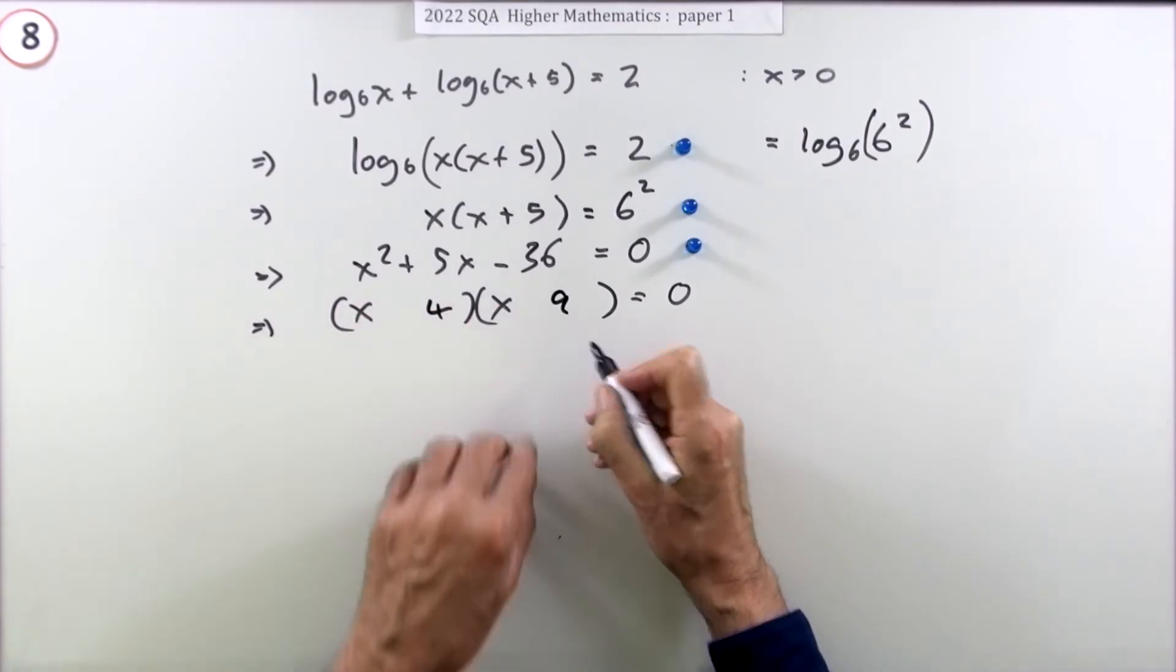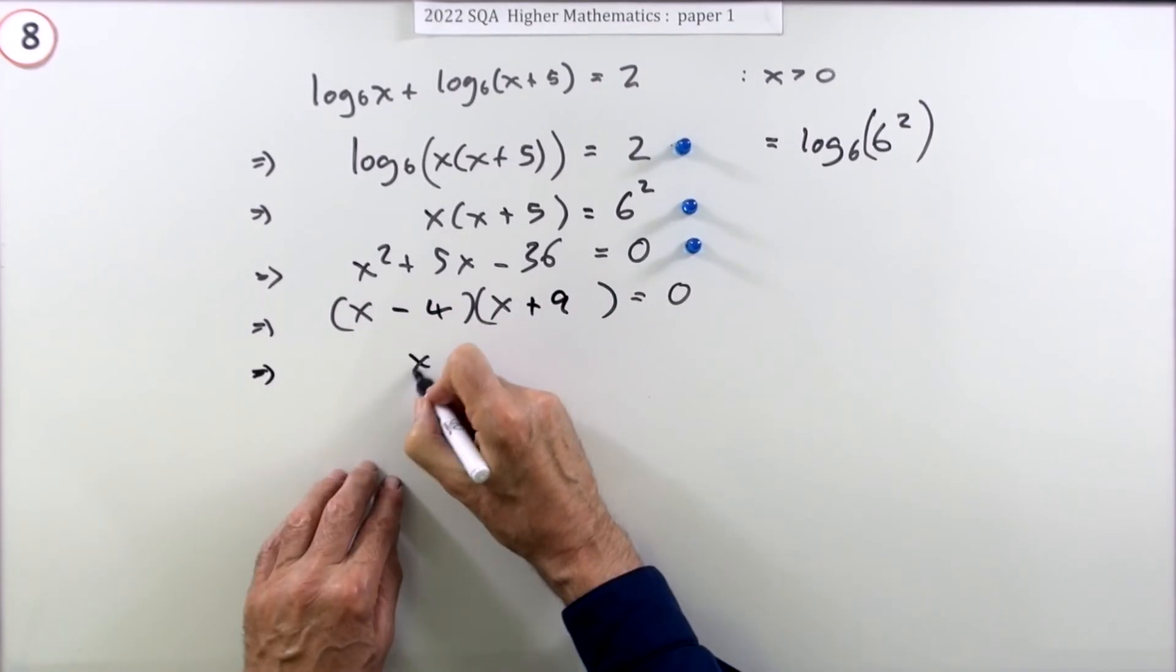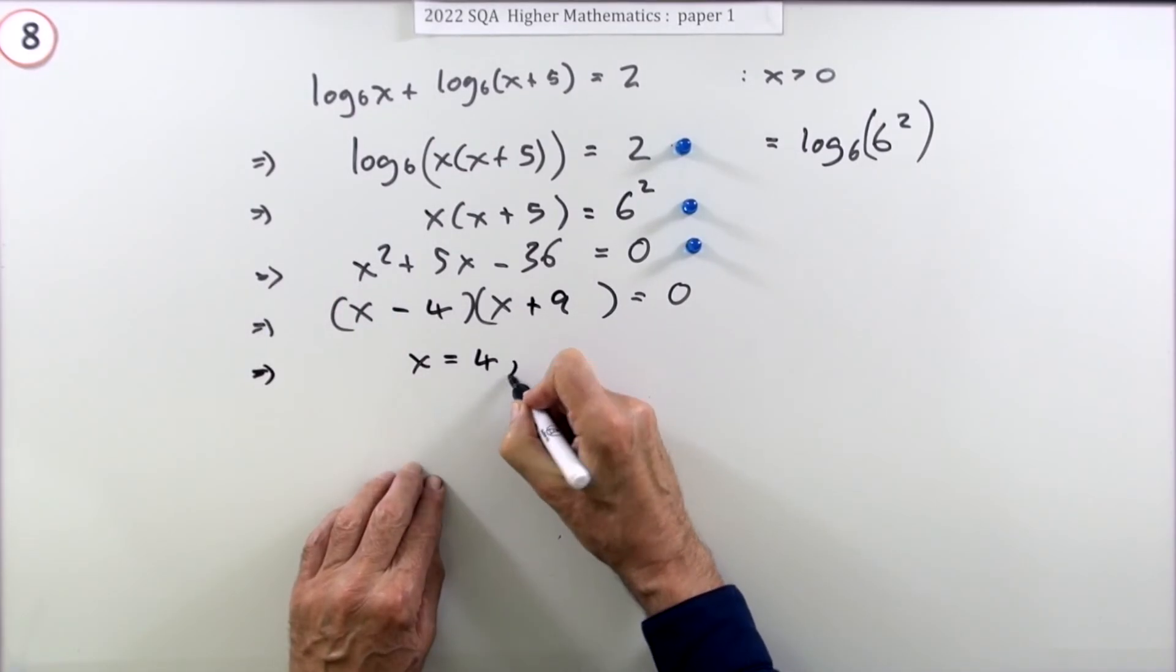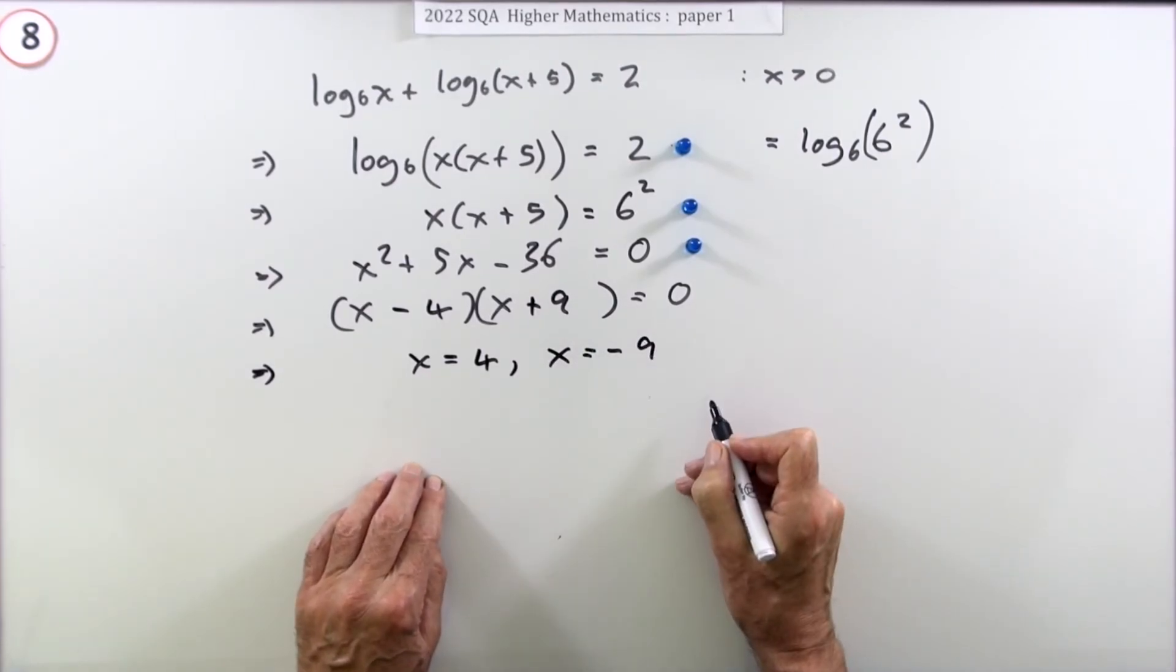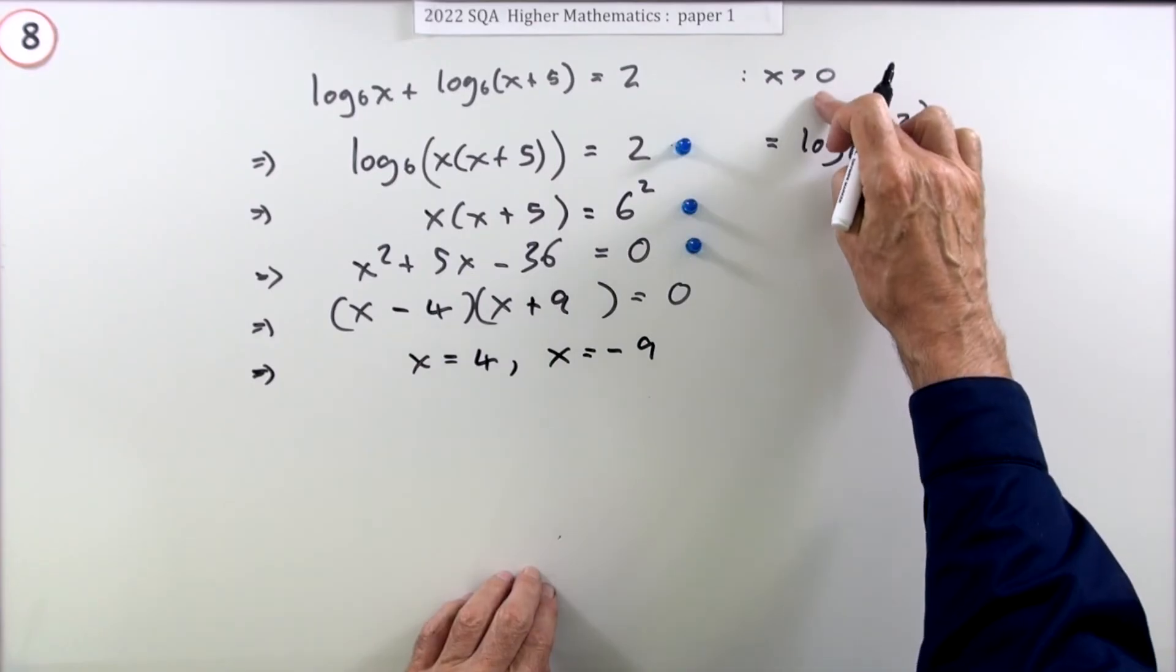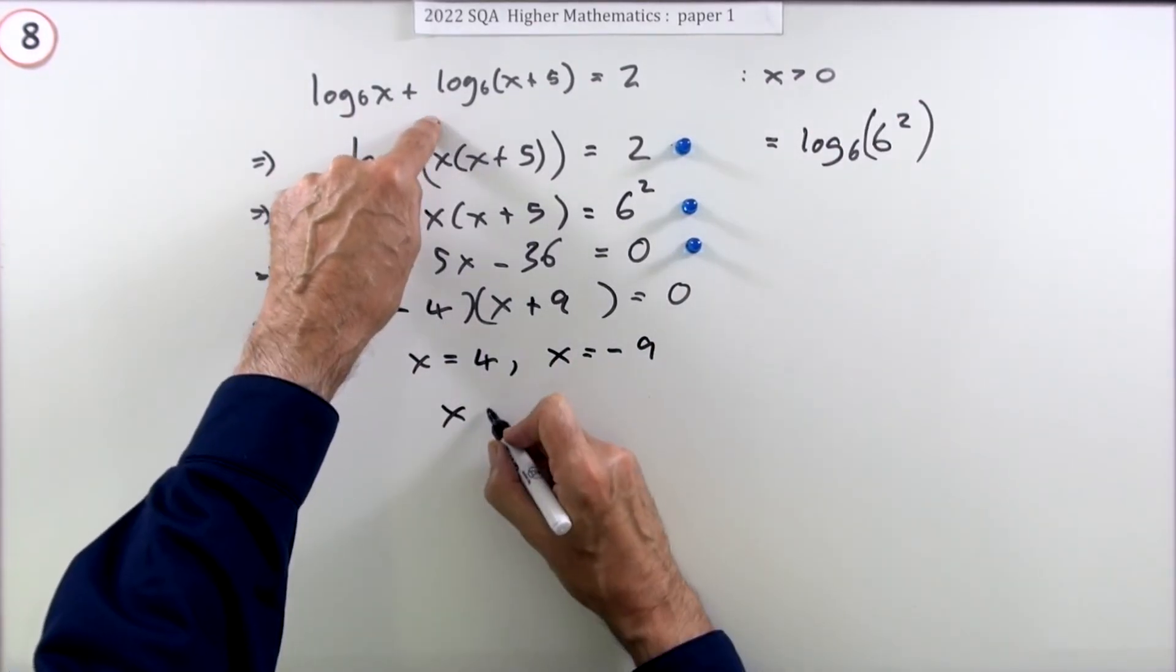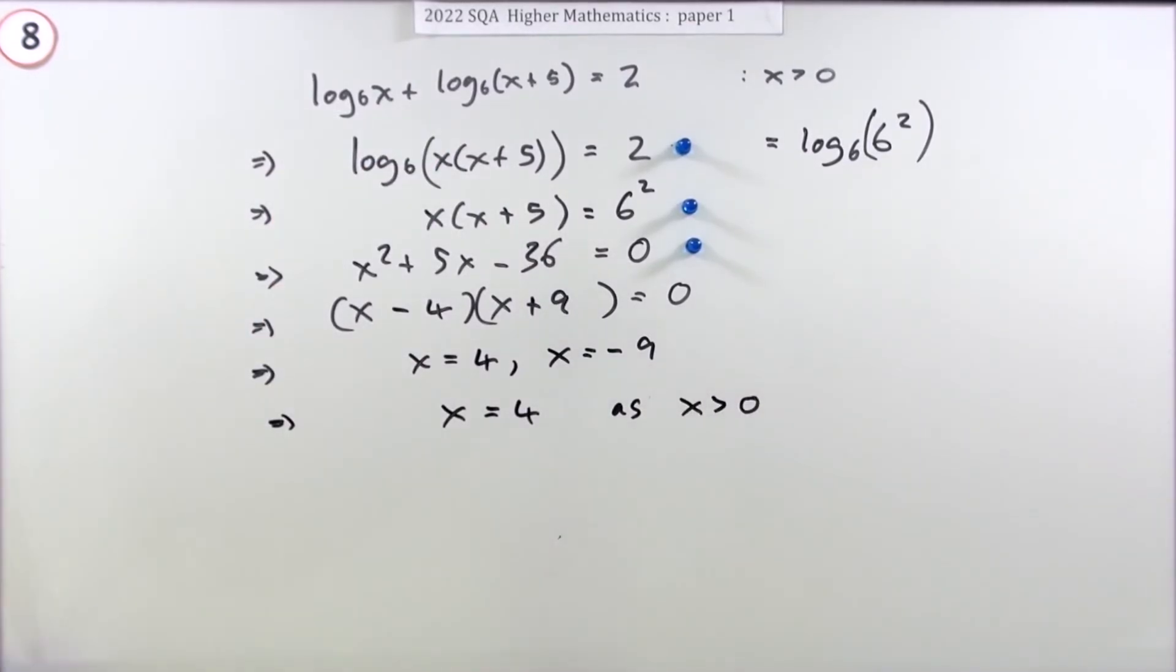Now you have to be careful though. There are two answers to this quadratic equation: there's x equals 4 and there's x equals negative 9. But x has to be greater than zero, which means there's only one solution to this equation, and that's x equals 4, as x has to be greater than zero. Now you get the mark.